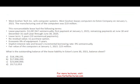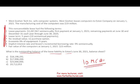Let's take a look at the first question. With a question like this that has a lot of data, I can ask you many different questions — so don't read the data first. See what you are being asked. You are being asked: what is the outstanding balance of the lease liability in Exton's June 30th balance sheet? West Goshen Tech sells computer systems and leases a computer to Exton Company on January 1st, 2021. The manufacturing cost of the computer is $19 million — this is not relevant because we're looking at Exton.